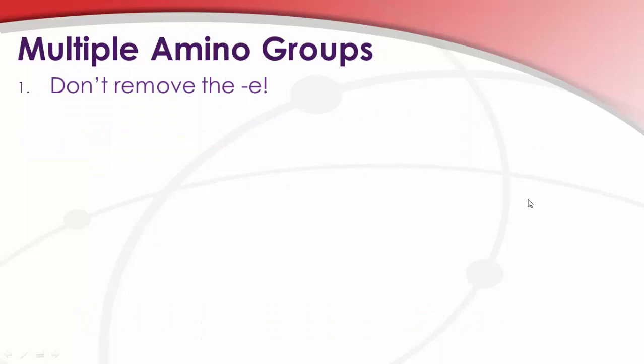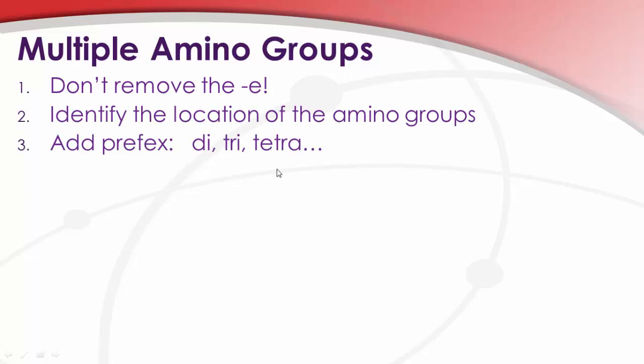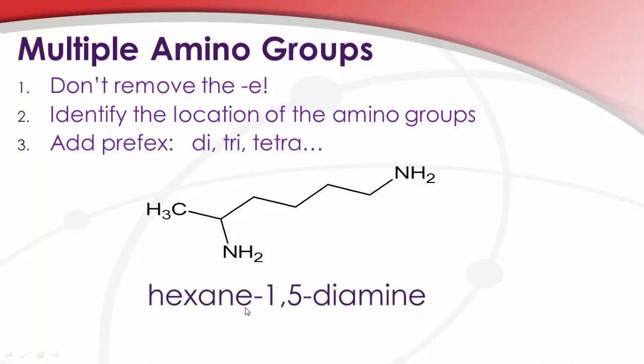If we have multiple amino groups, we always have the option to name just as if they're amino functionality. But we don't always, that isn't always typical. We'll often just use the di, tri, tetra, et cetera, and make sure that we clearly identify the location of the amino groups. So this clearly is a diamine. So we would have 1, 2, 3, 4, 5, 6. So this looks like hexane. Yes, hexane. And our attachment points are the 1 carbon and the 5 carbon. So this would be 1, 5, sorry, hexane-1,5-diamine.